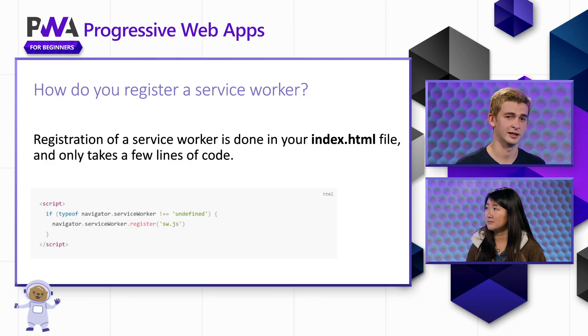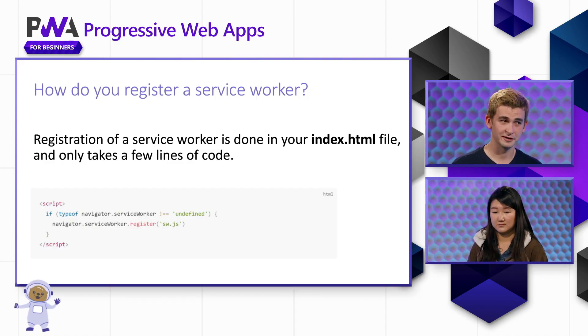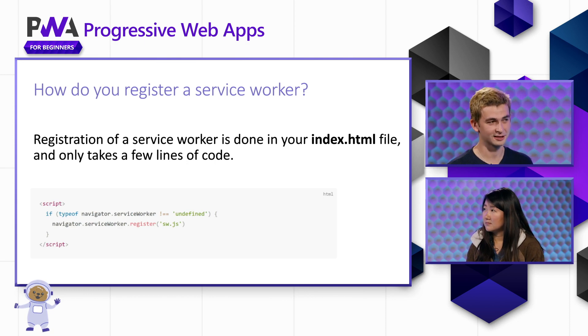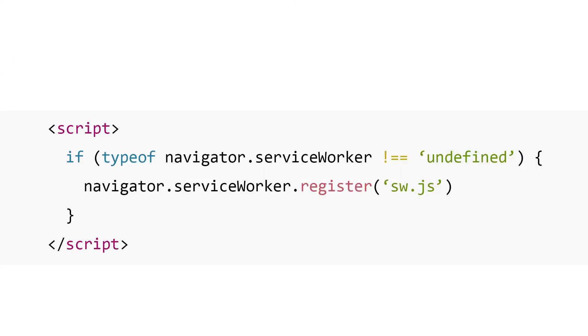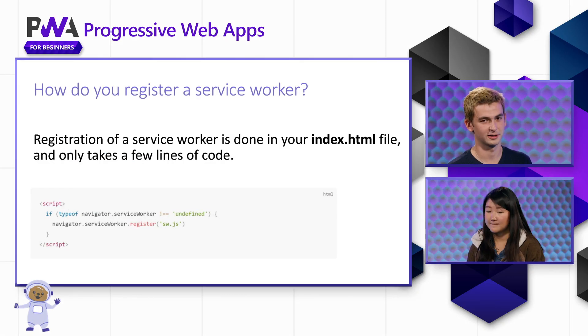We usually add our service worker to our project through a process called registration. Registration is pretty straightforward and just takes a few lines of code in your index.html. The first thing we have to do is check that our current browsing context even has access to the service worker capability, and then we're just going to make a call to service worker.register and pass in the name of our service worker, and then we're all good to go.